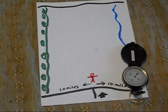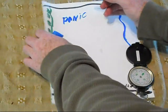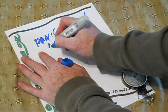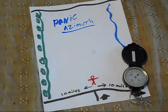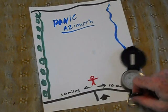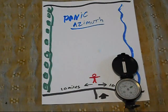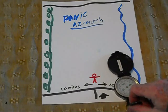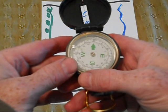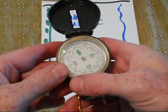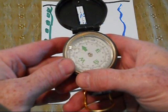What we're going to talk about today is a panic azimuth. An azimuth is the degree direction of where you want to go or what way you're going. So right now, if we're walking the direction this compass is pointing, our azimuth would be about 12 degrees.